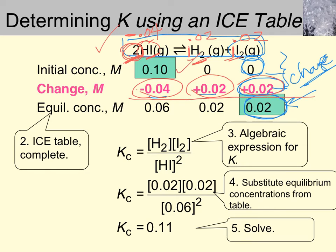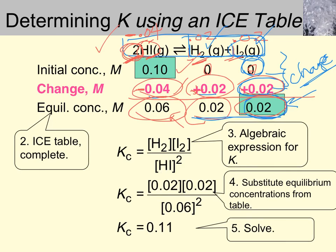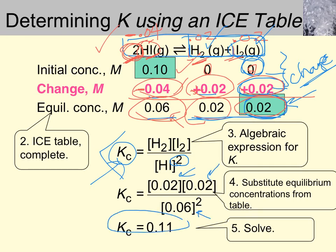Carrying out the math: 0.10 − 0.04 = 0.06 M for HI at equilibrium; 0 + 0.02 = 0.02 M for both H₂ and I₂. The two products being equal makes sense because they form in a 1-to-1 mole ratio. Plugging the equilibrium values into the equilibrium expression — remembering exponents, and excluding pure liquids and solids — gives K = 0.11. This means neither products nor reactants are strongly favored; a K between 0.1 and 10 indicates roughly equal concentrations.